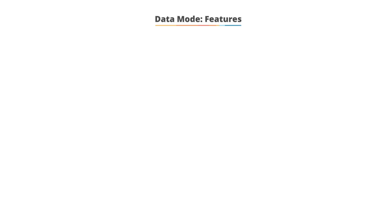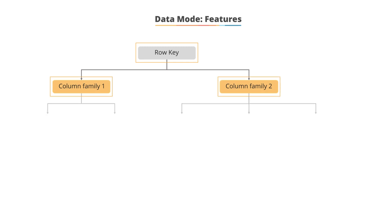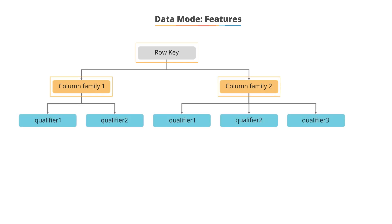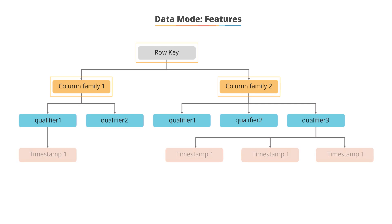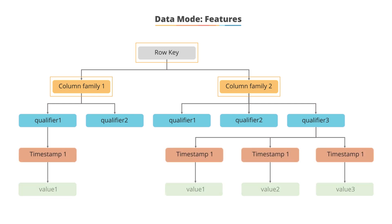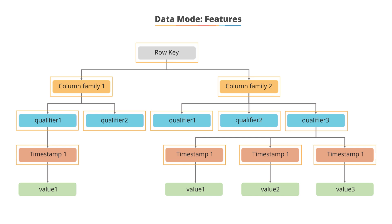Data model features. The first identifier of the data model is a row key. Column families are associated with column qualifiers. Each row has a timestamp and an associated value. Each qualifier supports both a timestamp and a value, which allows versioning of your data within the database.